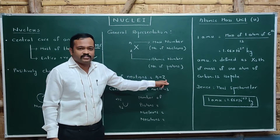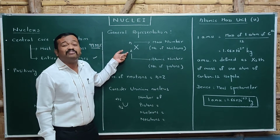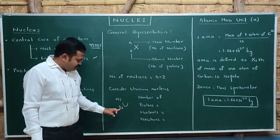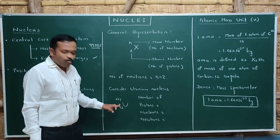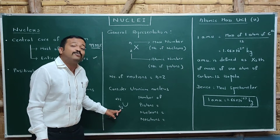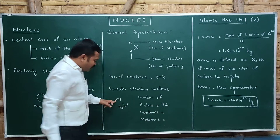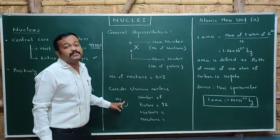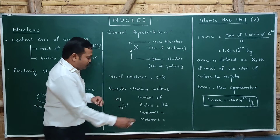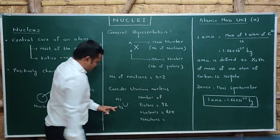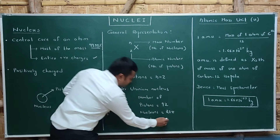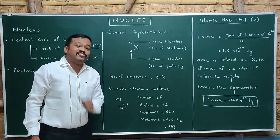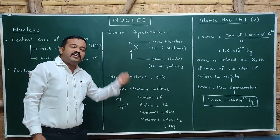The number of neutrons can be calculated by A minus Z. For example, consider the uranium nucleus written as U with atomic number 92 and mass number 235. The 92 represents the number of protons, and 235 represents the total number of nucleons — the mass number. To find the number of neutrons: 235 minus 92 equals 143. So there are 143 neutrons present inside the uranium nucleus.